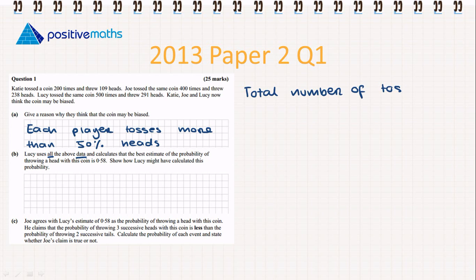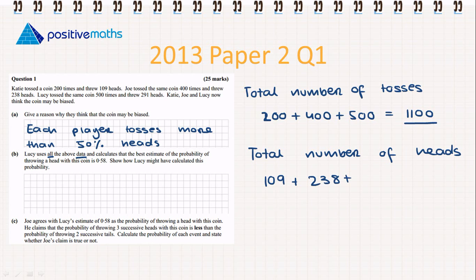We're going to add 200 plus 400 plus 500. This gives us 1,100 total tosses. Next, we want the total number of heads. We'll add 109 plus 238 plus 291. That gives us a total of 638.